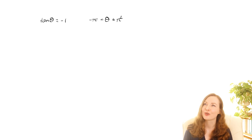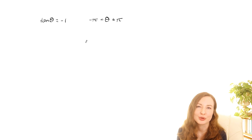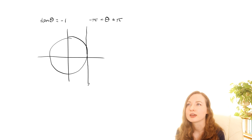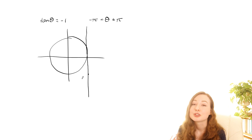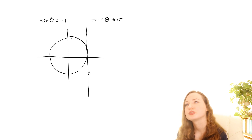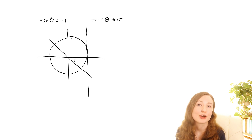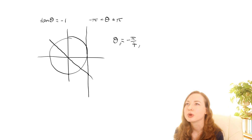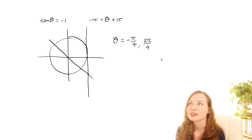Let's try tan theta equals negative 1 for theta between negative pi and pi. Pause the video here if you want to figure it out for yourself. What I would do first is draw the unit circle. For tan, draw in the line x equals 1 and then go down to y equals negative 1 on that line — because it's the unit circle, the radius is 1 so that point is down here at negative 1. Then draw a line through this point and through the origin. You can see that looks like 45 degrees, which is pi on 4 in radians. So this one would be negative pi on 4, and then the other angle would be 3 pi on 4.